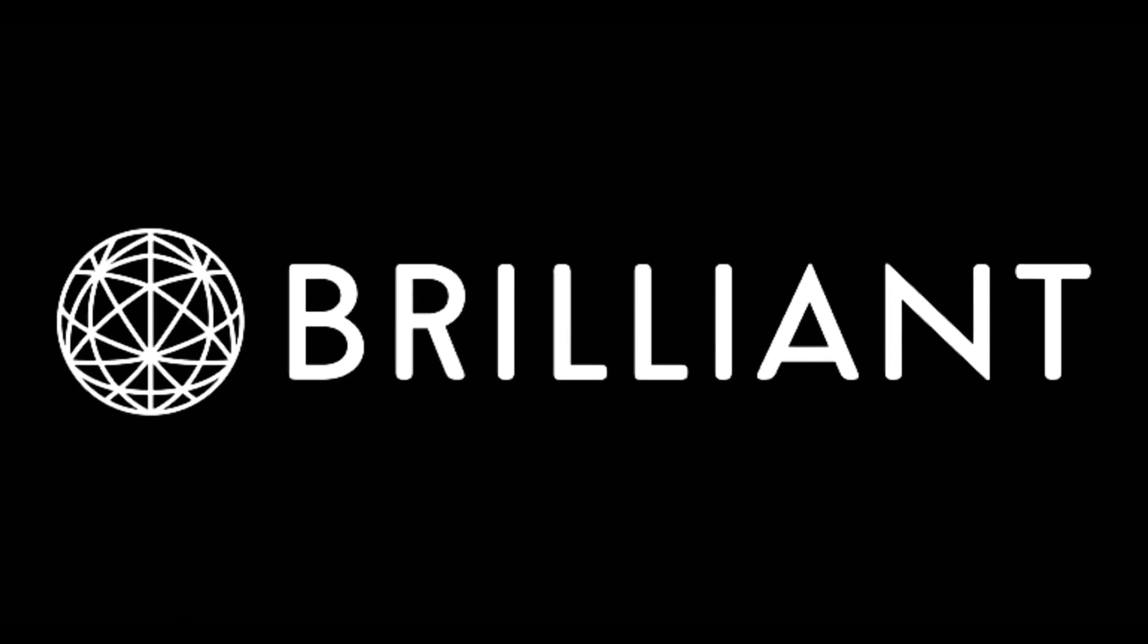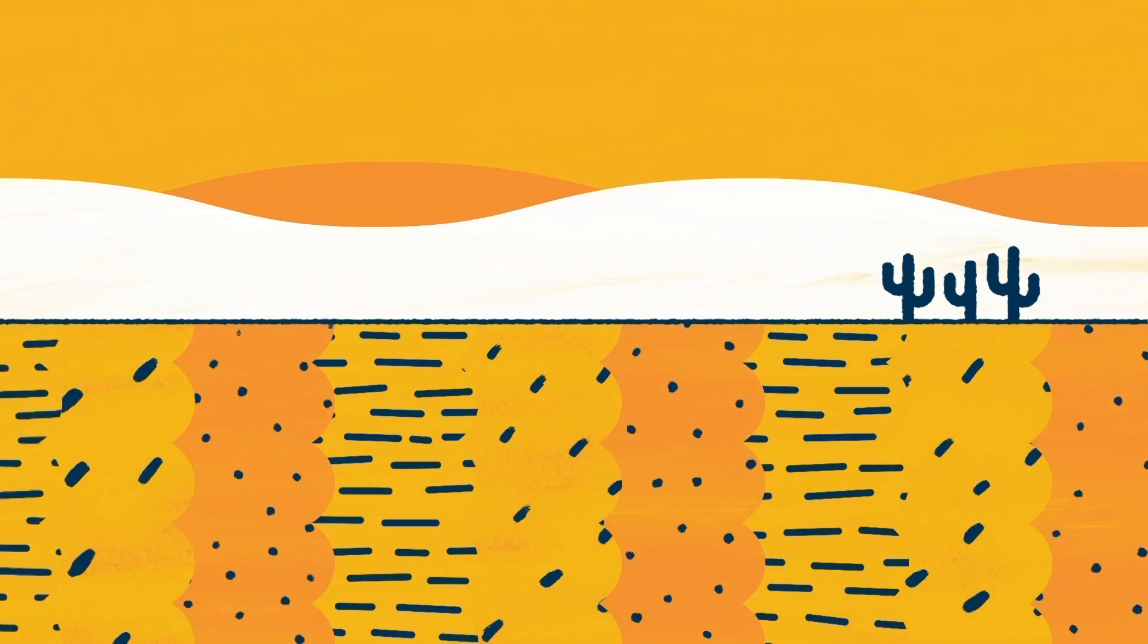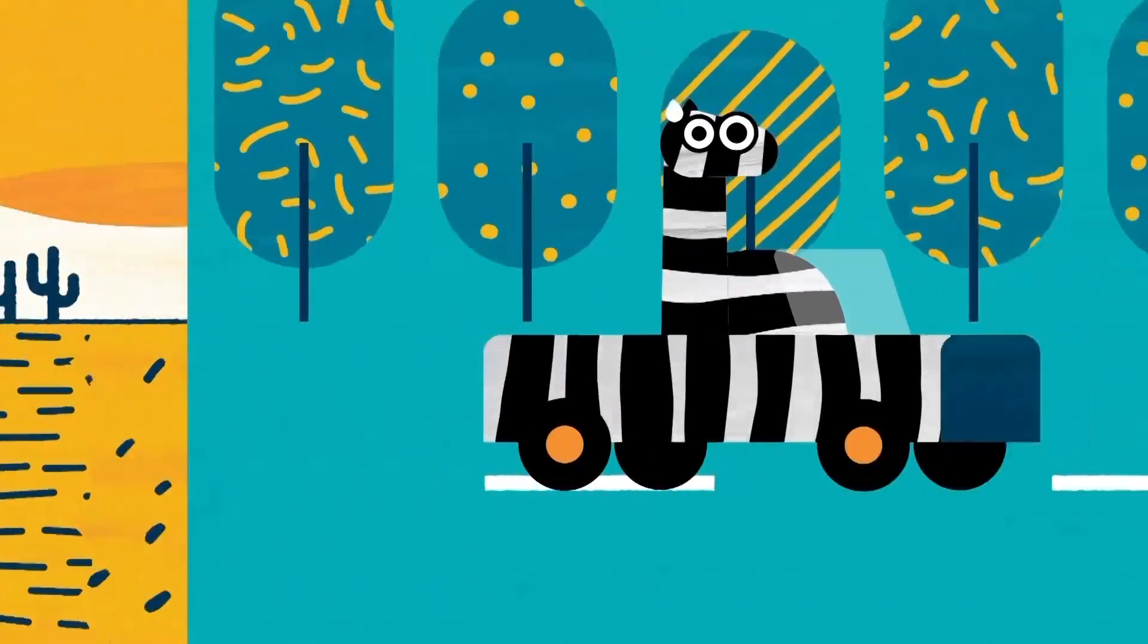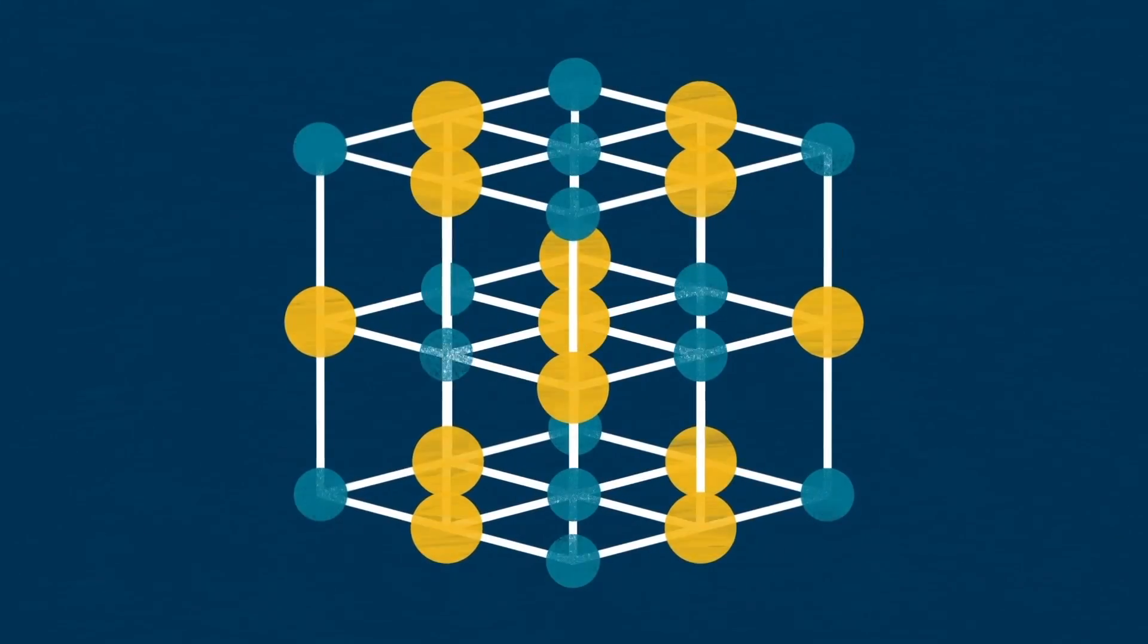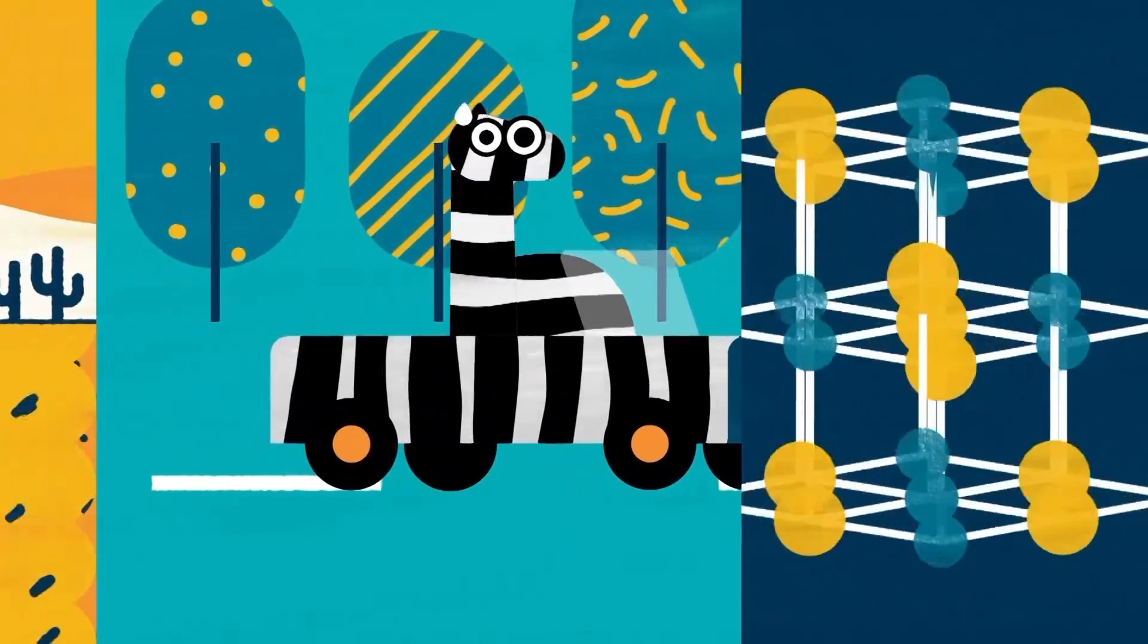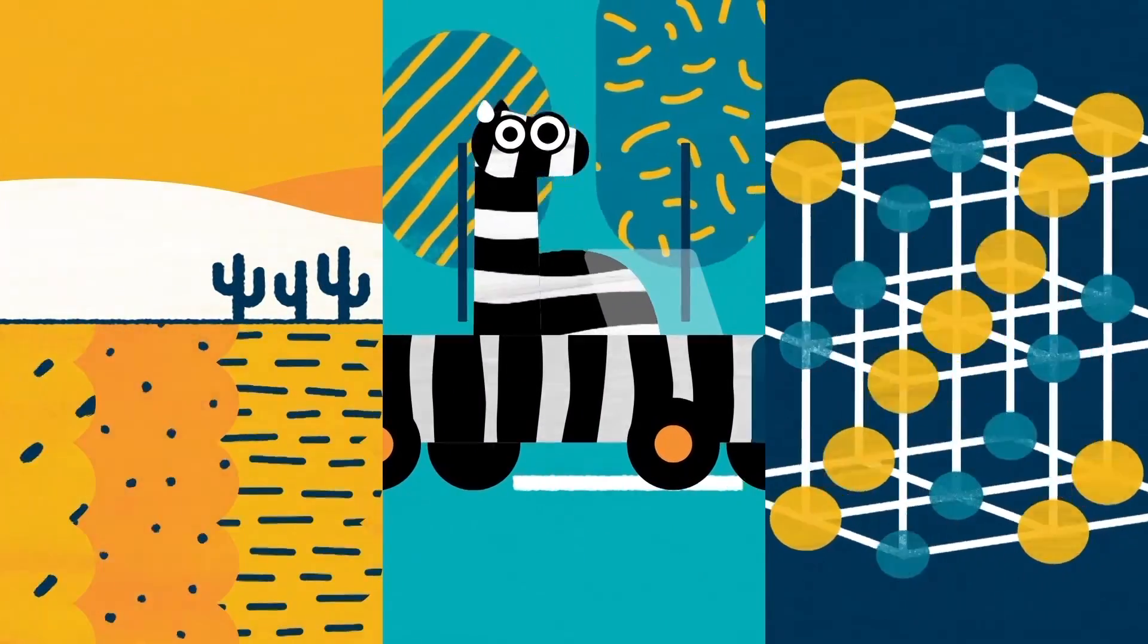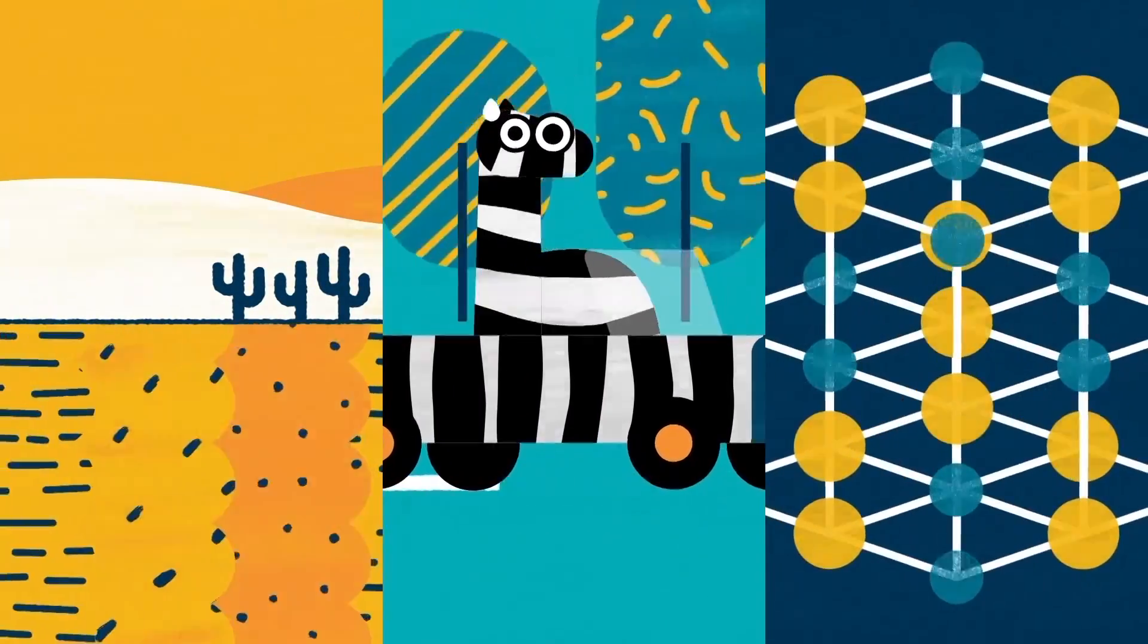This episode is sponsored by Brilliant. From ripples in the sand to the stripes on a zebra, all the way down to the sodium and chlorine atoms in a crystal of salt, repeating patterns in nature remind us how even the most chaotic systems can produce their own form of order.